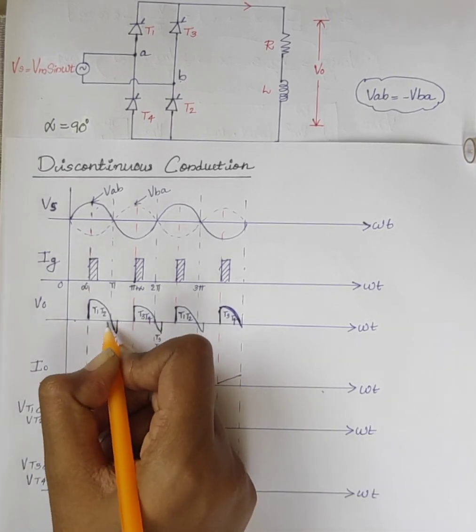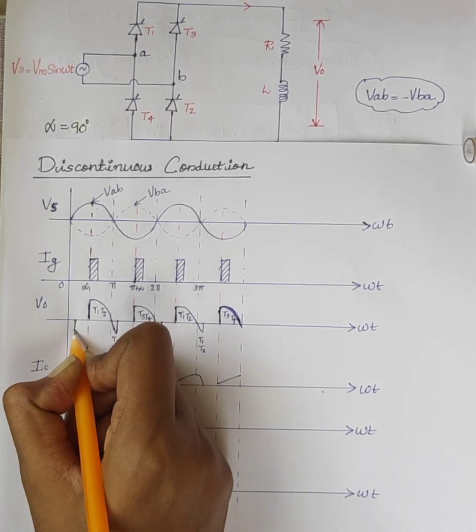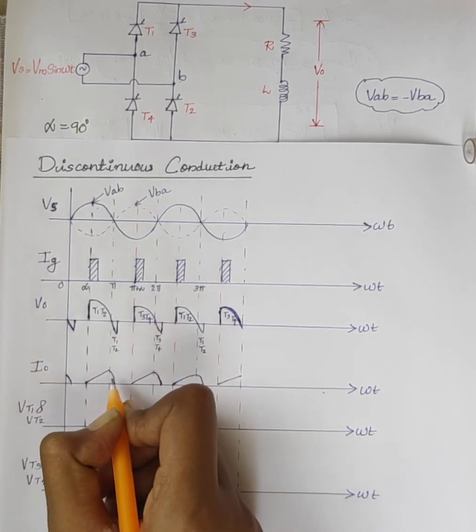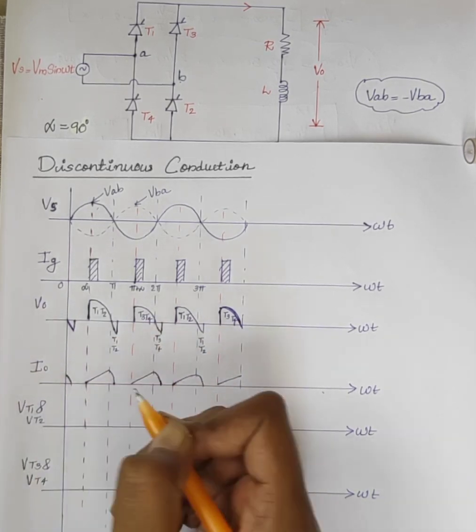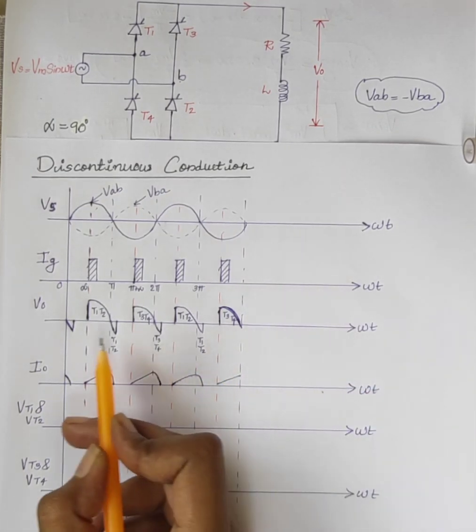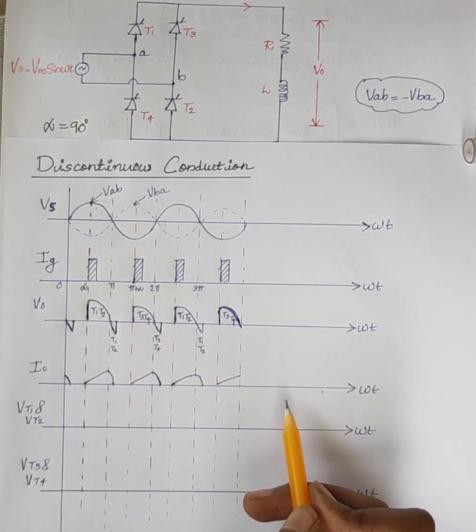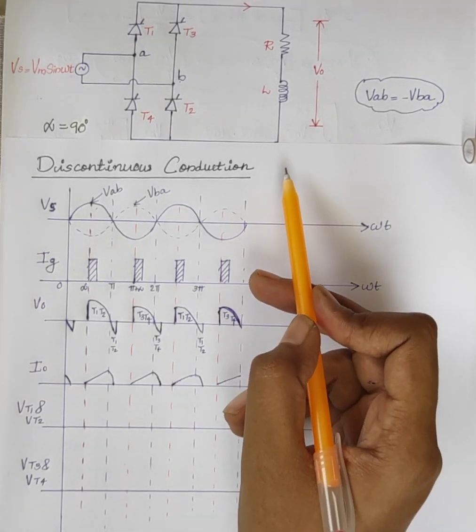This portion appears across here. The load current I0 is discontinuous. Hence, the name discontinuous conduction mode.